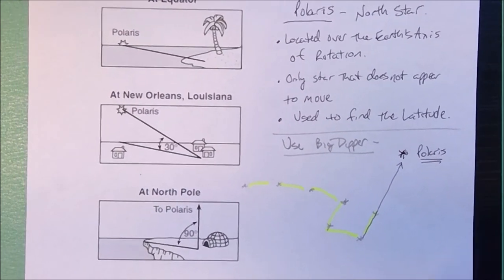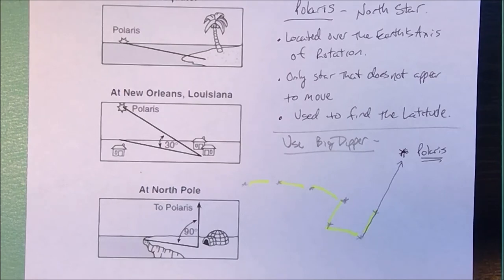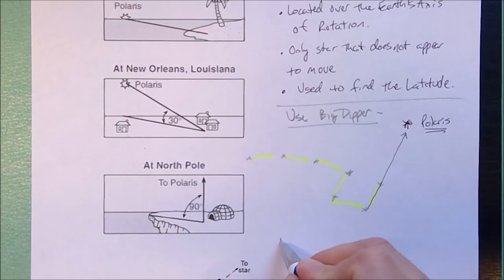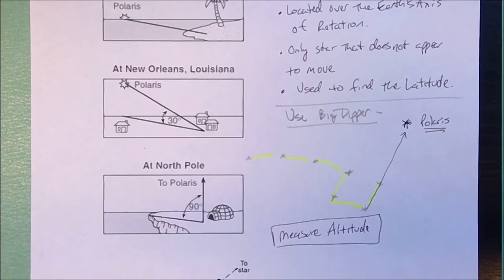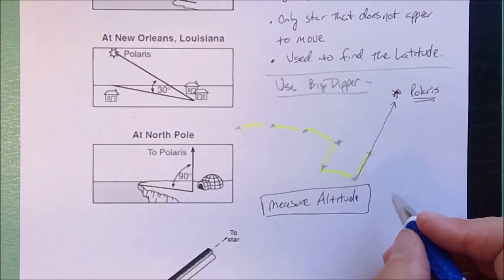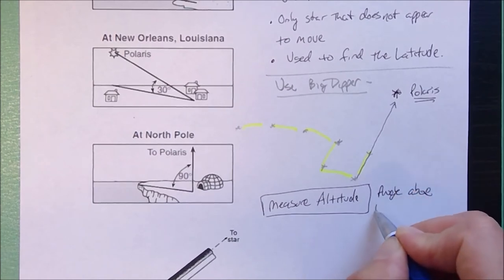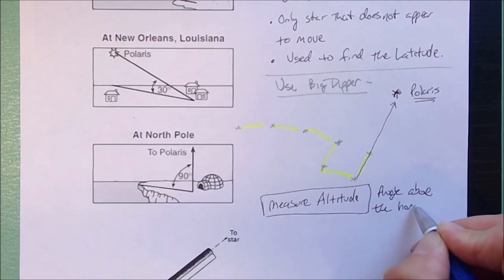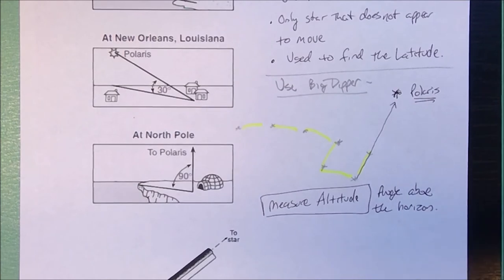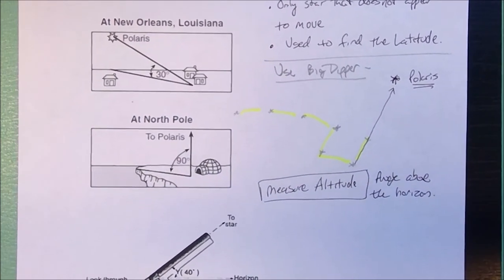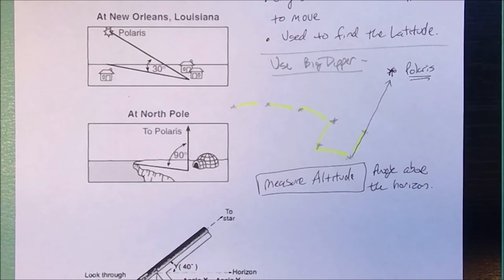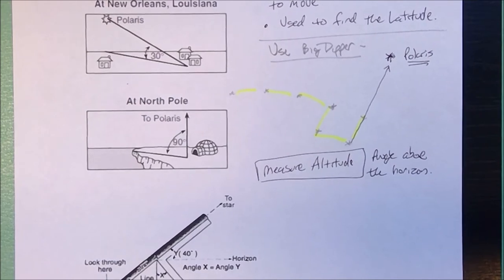Now once you've found Polaris, what we have to do is measure the altitude. So altitude is defined as the angle above the horizon. When you are looking at a celestial object like the sun, the moon, or the stars, you have to measure how high the object is in the sky. The maximum altitude is going to be 90 degrees.